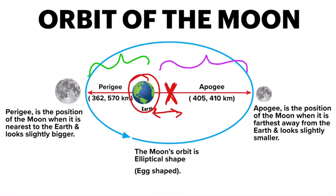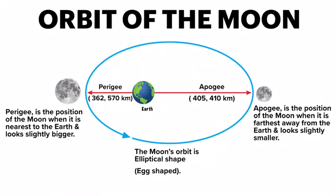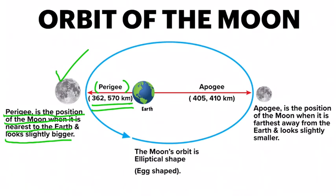On one side, the earth is closer to the moon. This side is called perigee. Perigee is the position of the moon when it is nearest to the earth, and the moon looks slightly bigger here. If you measure the distance between the earth and the moon at perigee, it comes out to 362,570 kilometers.